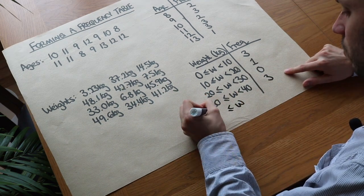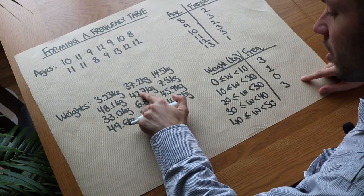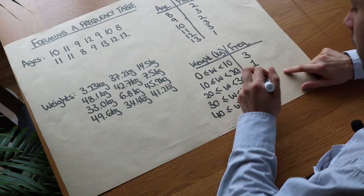And then between forty and fifty. How many do we have? One, two, three, four, five.